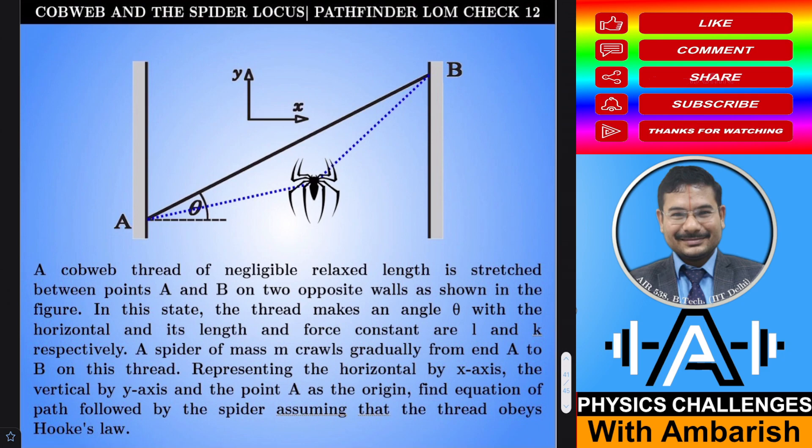Here's the problem: cobweb and the spider locus. A cobweb thread of negligible relaxed length is stretched between points A and B on two opposite walls as shown in the figure. This is the cobweb thread stretched between points A and B. In this state, the thread makes an angle theta with the horizontal and its length and force constant are L and K respectively.